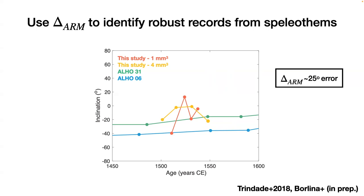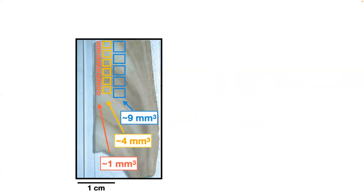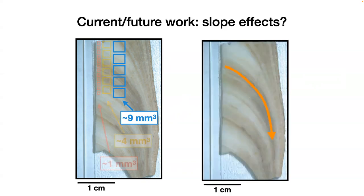I'm happy to discuss limitations of the delta-ARM parameter during Q&A. I didn't show data for the largest volume set because we're still trying to understand what's happening there — as you move away from the central axis of the speleothem, you get to more sloped areas, and even 9 cubic millimeter samples give inclination values that are very off. We're now obtaining 9 cubic millimeter samples closer to the central region, which requires cutting a new thick section and also requires helium, which is currently hard to get.